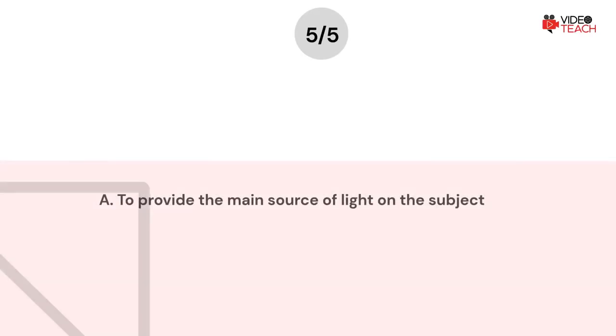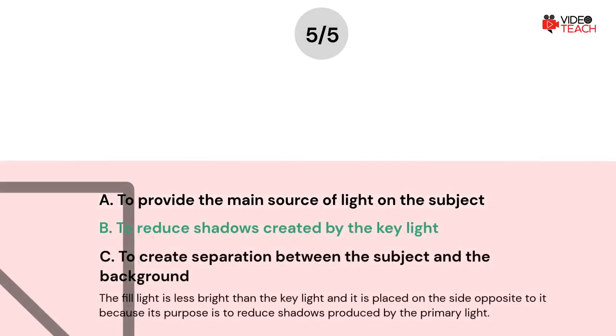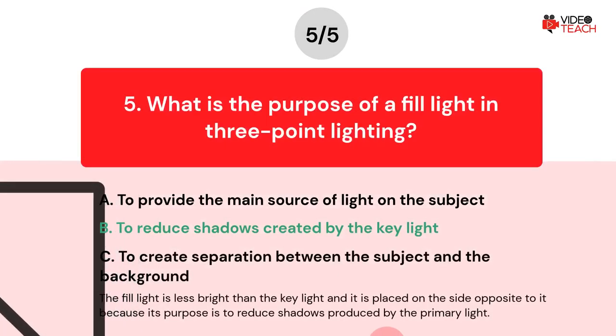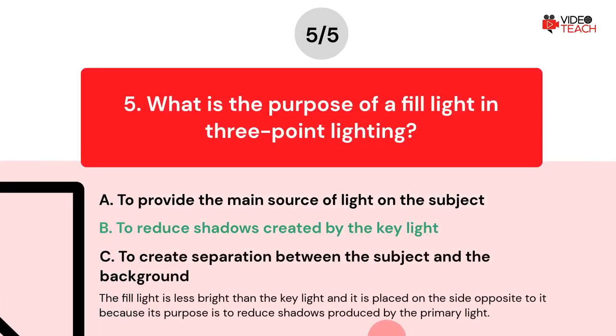The correct answer is Option B. The fill light is less bright than the key light and it is placed on the side opposite to it, because its purpose is to reduce shadows produced by the primary light.